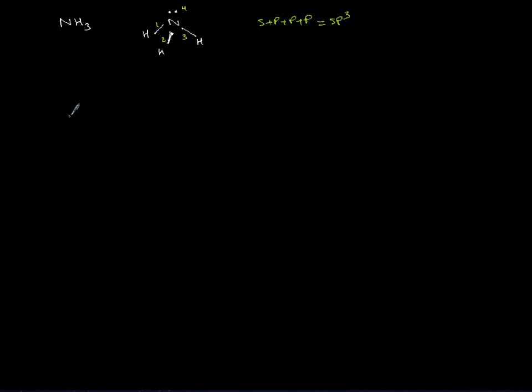So this should be sp3 as well. Now let's just look at nitrogen in its ground state. Nitrogen is 2 comma 5. The first two electrons are in 1s2, do not participate in bonding. Then you have 2s, two electrons there. Then in your 2p you have one electron into each.